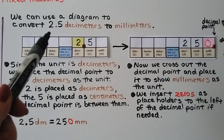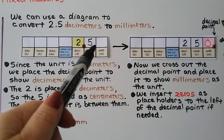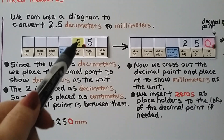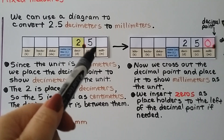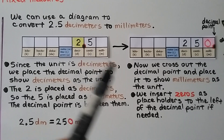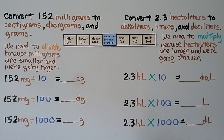If this were 25 decimeters, we would have the decimal point right here, with the 25, and then we would move the decimal point to the place value for that unit.